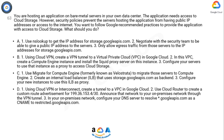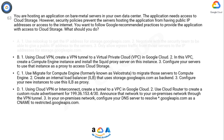Option A is incorrect. It's bad practice to use nslookup to find a permanent IP address because IPs can change — that's what DNS is for. Also, the security team aren't going to budge on their policy.